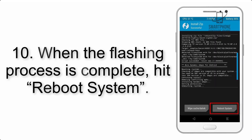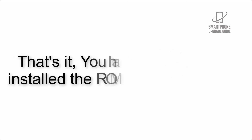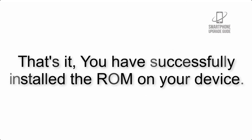Step 9: After GApps flashing completes, select Wipe Cache and Dalvik from the bottom left side of the screen and swipe to wipe. Step 10: When the flashing process is complete, hit Reboot System. That's it — you have successfully installed the ROM on your device.